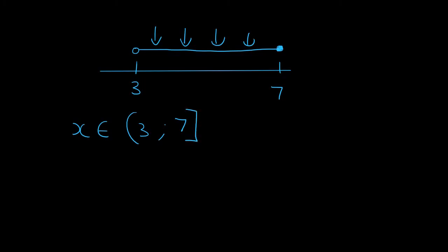In set builder notation we do the funny brackets. And we say x. We can then say x must be anything bigger than 3. See how the crocodile is eating the x. And then x must be smaller than and equal to 7.